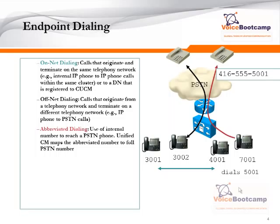Abbreviated dialing is like from on-net to off-net. For example, let's say you hire a consultant from outside who is working from home. You assign that person an extension 4001 or 5001, but that user does not have an IP phone — he is working from home. So what he can do is that 5001 can be converted to his home number by using a translation. That is called abbreviated dialing. The user pretends to be inside, but he is really on an outside network.